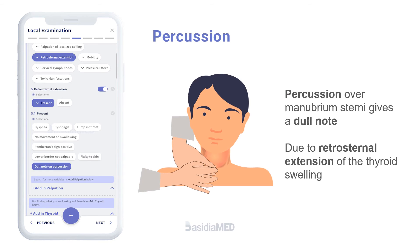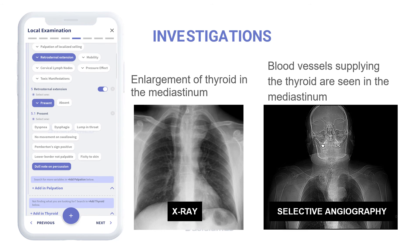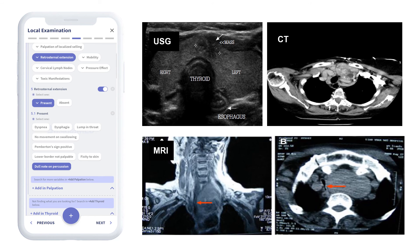Percussion of the manubrium would give a dull note in the case of a retrosternal goiter. Investigations such as X-ray and angiography can be used to confirm the diagnosis. Further, USG, CT, and MRI are performed for better visualization of the growth.